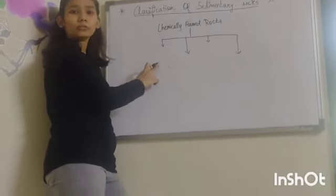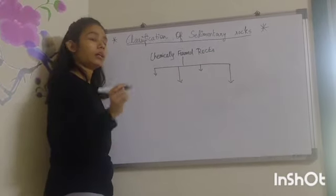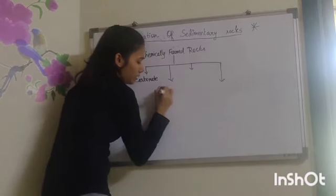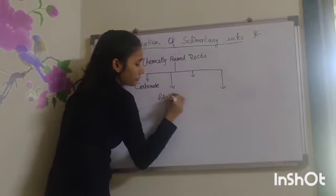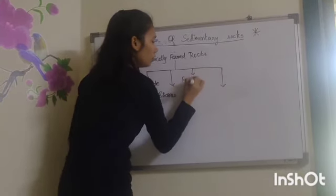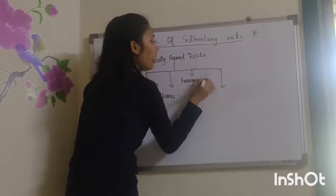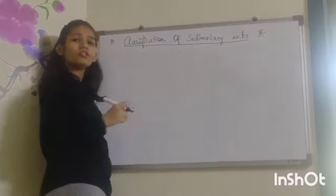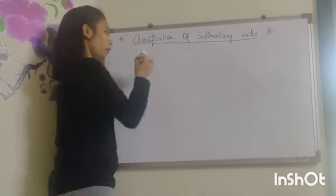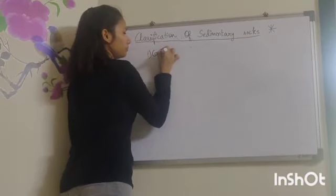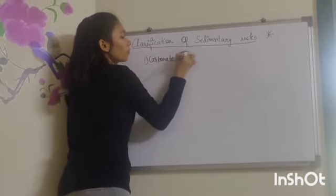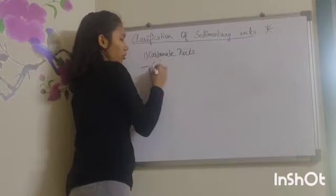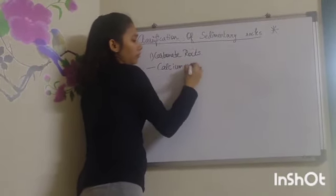Chemically formed rocks are further divided into four subcategories on the basis of their chemical composition. First is carbonate rocks, second is siliceous rocks, third is ferruginous rocks, and fourth is salt rocks. Carbonate rocks are formed due to chemical precipitation of calcium carbonate in water.